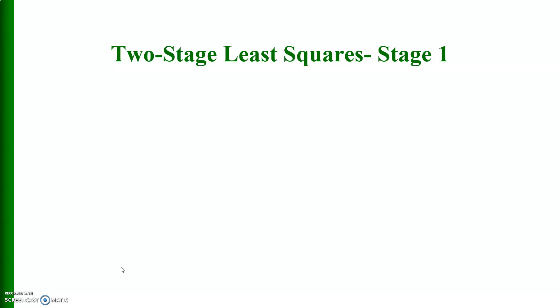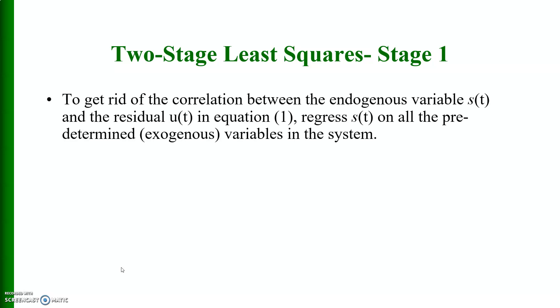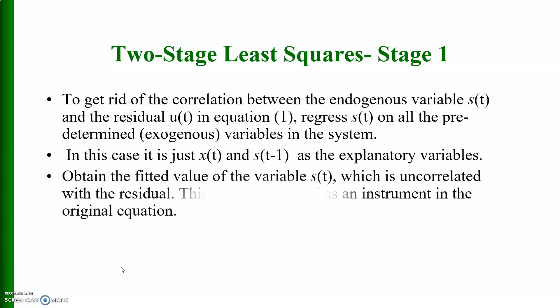Now, let me concentrate on stage 1 of the two stage least squares. To get rid of the correlation between the endogenous variable s_t and the residual u_t in equation 1, regress s_t on all the predetermined exogenous variables in the system. In this case, it is just x_t and s_t minus 1 as the explanatory variables. Then we will obtain the fitted values of the variable s_t which is uncorrelated with the residual. This can now be used as an instrument in the original equation.